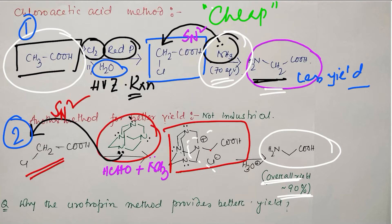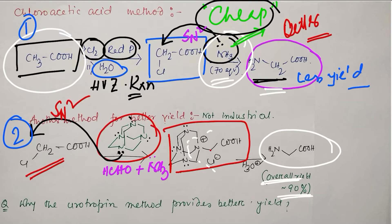The first method — directly using ammonia — is better economically. Using excess ammonia reduces the probability of multi-alkylation at the primary amine stage. Remember, industry runs by economics, and economics run by profit, which comes from cheap methods. Science and technology aim to achieve a particular target through the most cost-effective approaches.